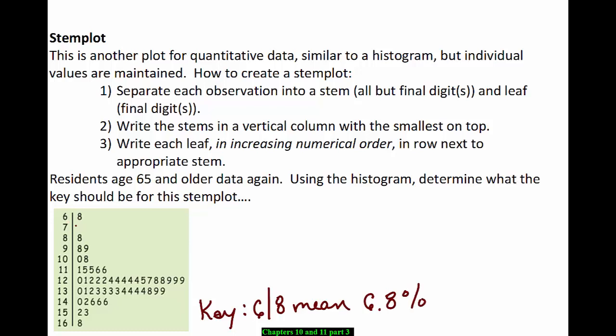Notice there's not a zero above the 7. If we put a zero there, like this, that would mean we had a state that had 7.0% of its residents age 65 and older. And we don't have that. We don't have any states that fell into the 7's range in the percentages.